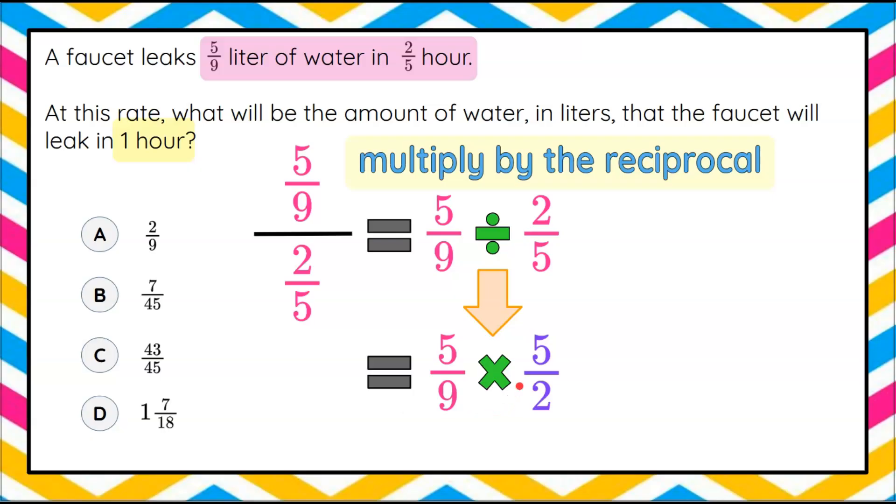All right, now we need to simplify this to find our correct answer. So we're going to multiply our fractions. We're going to first multiply our numerators. Five times five is 25. Now we're going to multiply our denominators. Nine times two is 18.